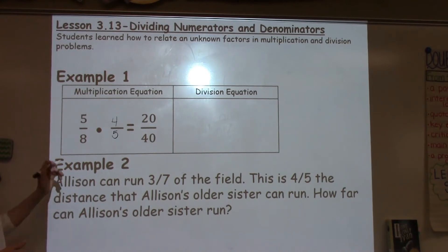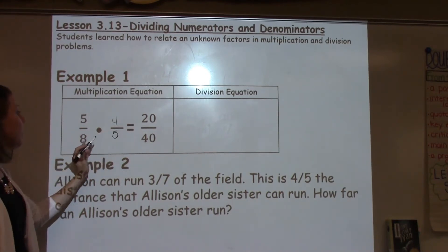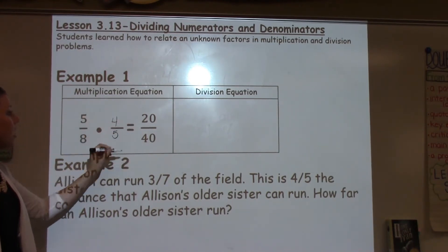So, I'm looking for what the multiplier was here, and I know 5 times 4 is 20, 8 times 5 is 40. So, I know that I have 4/5.